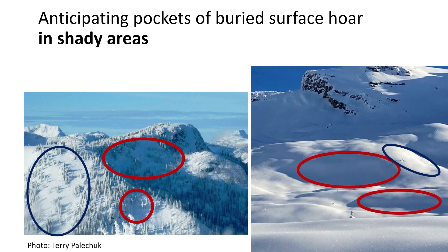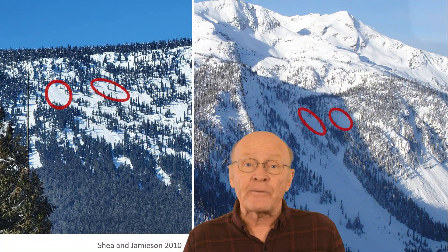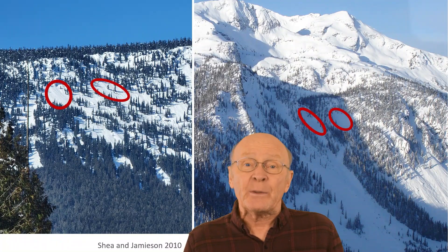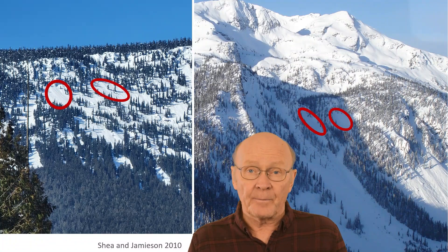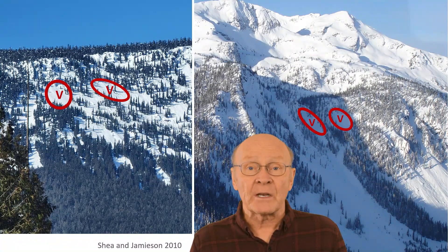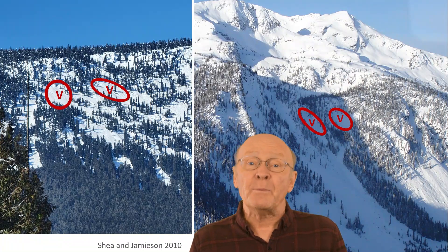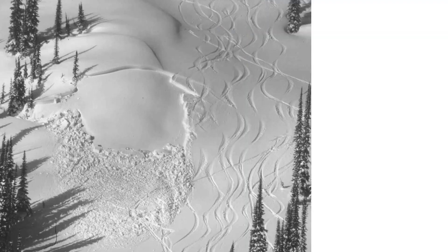After a suspected surface hoar layer has been buried, we can observe snow profiles or instability tests to search for buried surface hoar on slopes that are not steep enough to slide. For small forest openings, the surface hoar crystals tend to be larger in the middle, where the snow surface has a wide view of the sky and hence optimal surface cooling. On sufficiently steep slopes with small openings in the forest, triggering may be more likely in the middle of the small openings.